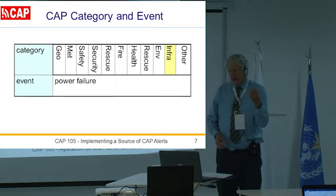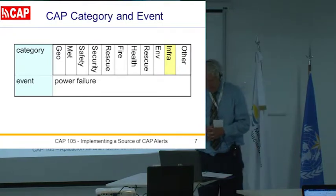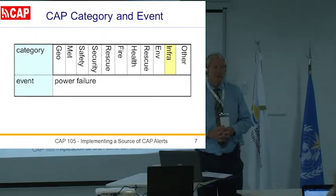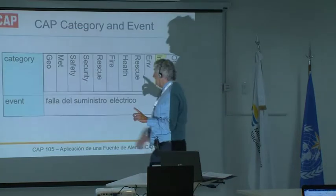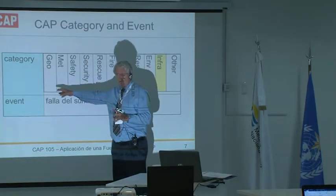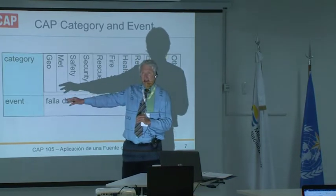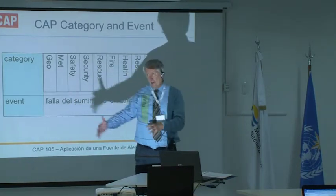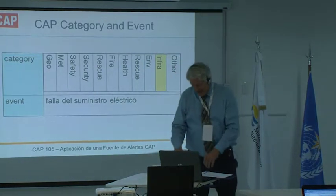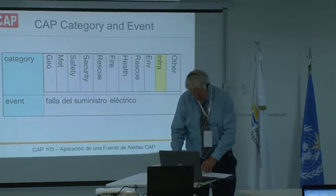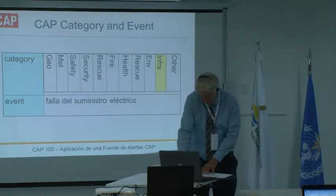We want to fill in the category. We have 11 to choose from, and you can select multiple. For example, if you're doing a landslide, a landslide is geophysical, but it's also meteorological because the land generally doesn't slide absent rain. So landslides are both geophysical and meteorological.